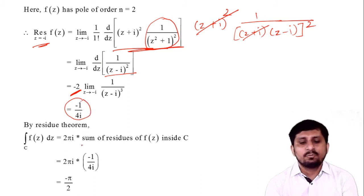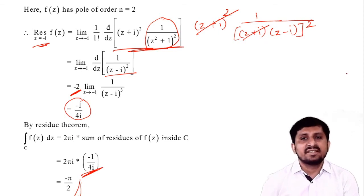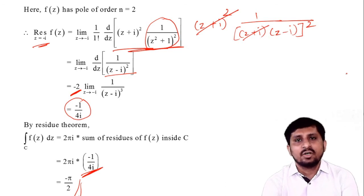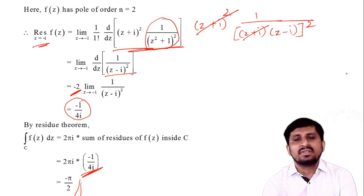So the final answer is −π/2. In today's lecture we discussed the Cauchy residue theorem and solved several examples over the last two lectures. We completed the last chapter on residues, covering how to find residues using Laurent series, direct rules for finding residues, and the Cauchy residue theorem — which allows us to find the value of integration of f(z) over a closed contour C. Thank you.